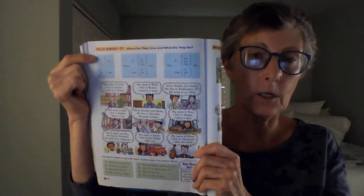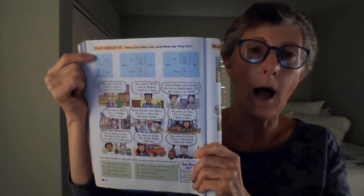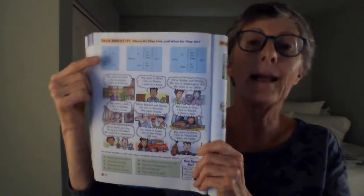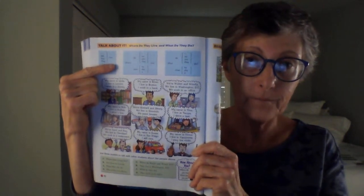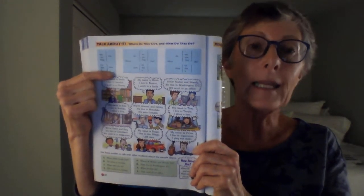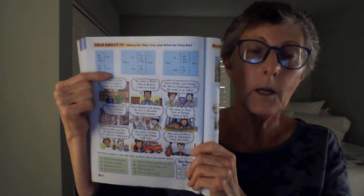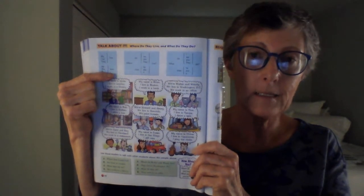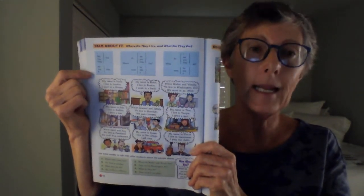And remember, for the answer, we have I, we, you, they live. He, she, it lives. We need the verb plus the S for he, she, it.